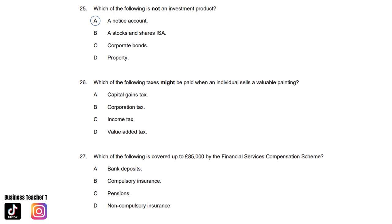Question twenty-six: Which of the following taxes might be paid when an individual sells a valuable painting? A. Capital gains tax. B. Corporation tax. C. Income tax. Or D. Value added tax. And the answer is A. Capital gains tax. Question twenty-seven: Which of the following is covered up to £85,000 by the Financial Services Compensation Scheme? A. Bank deposits. B. Compulsory insurance. C. Pensions. Or D. Non-compulsory insurance. And the answer is A. Bank deposits.